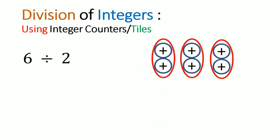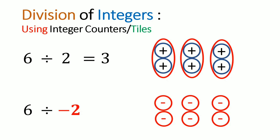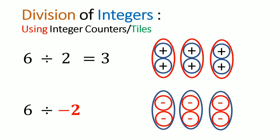Recall when we had 6 divided by 2, we had 3 positive groups. But suppose if we had 6 divided by negative 2. The minus sign negates what you had before — in other words, it's the opposite of what you had before. So if you had positive tiles before, now you would have negative tiles — that is, 6 negative tiles. Dividing them in groups gives us 3 groups of negative tiles. So 6 divided by negative 2 is equal to negative 3.